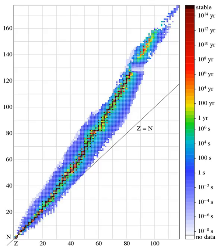No stable nuclides have neutron number 19, 21, 35, 39, 45, 61, 89, 115, 123, and 127.